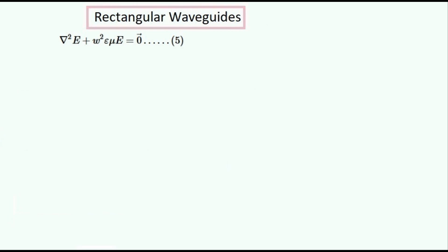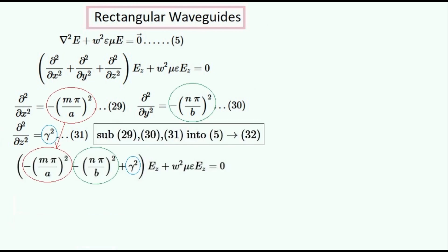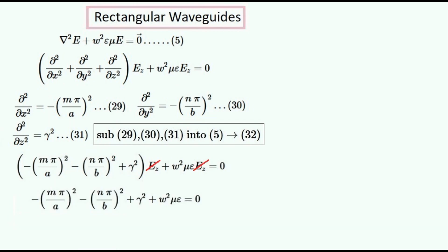So now we're ready to find all of the variables of the waveguide. We'll start off with the wave equation that we derived earlier in part one. Expanding the Laplacian operator gives us this equation, and we have all of these small equations that we can substitute into it. Substituting these equations into it gives us this equation. We can divide this equation by Ez because it is non-zero.